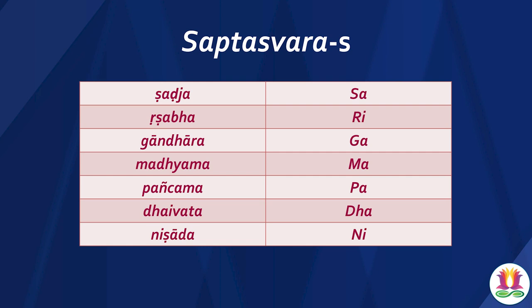When you sing, you don't sing Shajja, Rishabha, Gandhara — you shorten it and sing Sarigama Padhani. These can be called as the solfa syllables of our music, just like Dore, Mipha, Solati in Western music. These are our solfa syllables. In fact, it is India's contribution to world musicology — Indian musicologists were the earliest to devise this full-fledged scheme of seven Swaras.